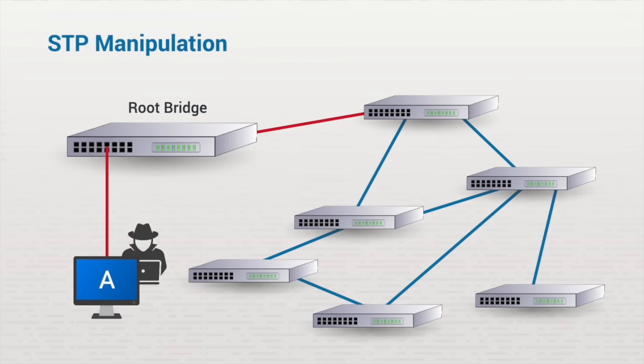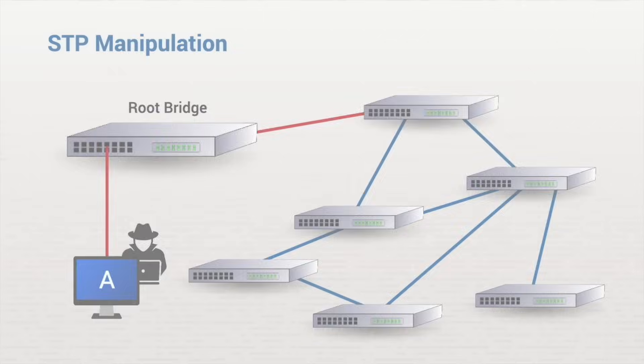An attacker accomplishes this manipulation by sending bridge ID frames, or BID frames, with a lower ID than that currently being used by the legitimate root bridge.